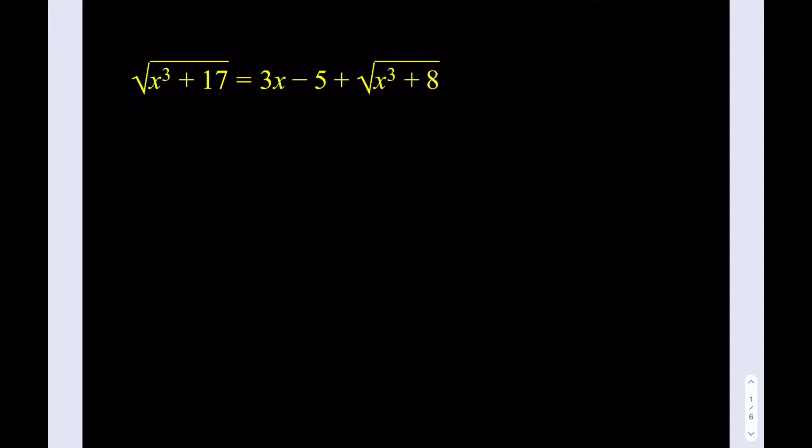Hello everyone. In this video we're going to be solving a radical equation. We have the square root of x cubed plus 17 equals 3x minus 5 plus the square root of x cubed plus 8, and we're supposed to solve for x.